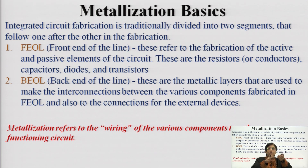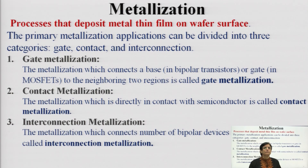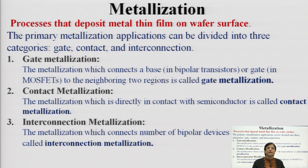In the front end you define the component surfaces, and interconnections are established once the components have been individually fabricated. This interconnection within the IC as well as external to the devices is the job of metallization — a process where we deposit a thin film of metal on the wafer surface. Primary metallization applications are divided into three categories depending on the desired device area.